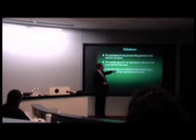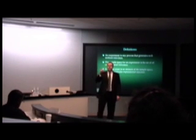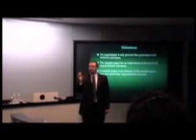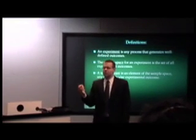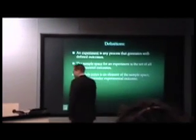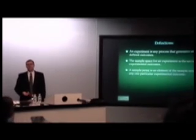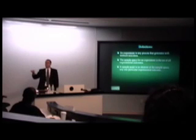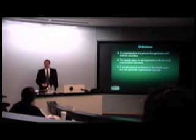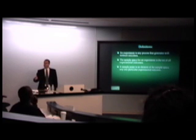So, assuming that this thing can't land on its side or on a point, how many sample points do we have for rolling this die? Six. Everybody happy with that? So the sample space is the set of all possible sample points. What are the sample points? One, two, three, four, five, six. That's the sample space.